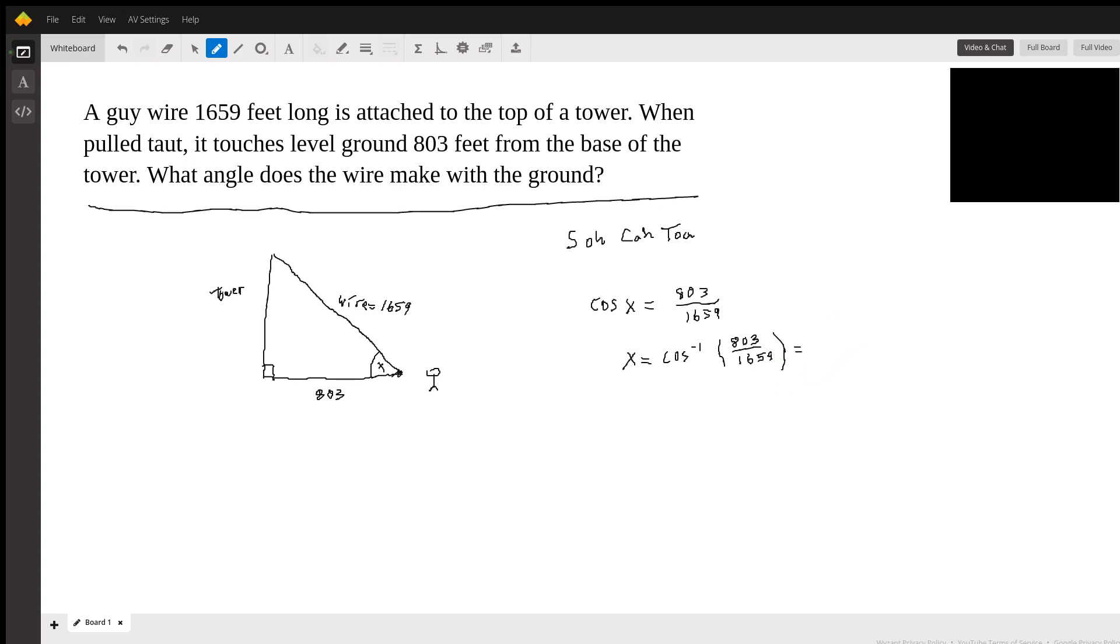They don't specify whether they want this angle in degrees or radians. I'm just going to do it in degrees. Get on my calculator, find the inverse cosine of 803 divided by 1659, and that's giving me 61.05.